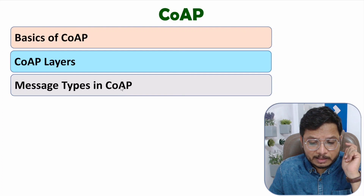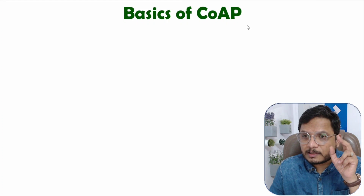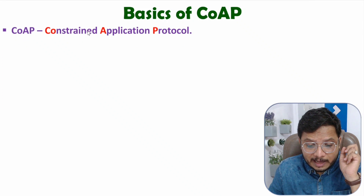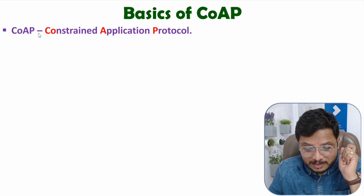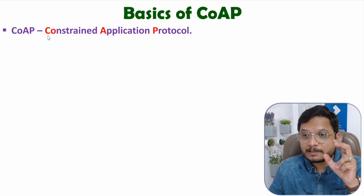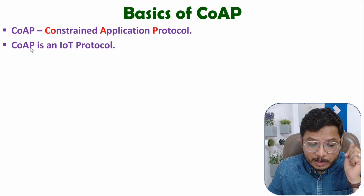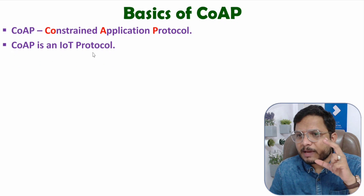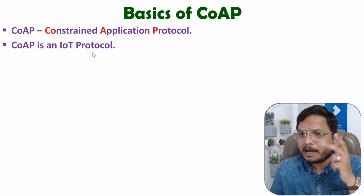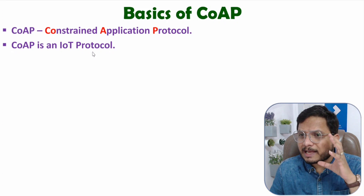Let us start with the first agenda: basics of CoAP protocol. CoAP stands for Constrained Application Protocol. CO stands for Constrained, A stands for Application, and P stands for Protocol. CoAP is an IoT protocol, mainly designed for M2M and IoT systems.